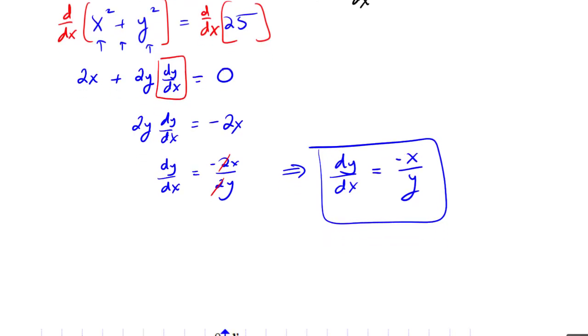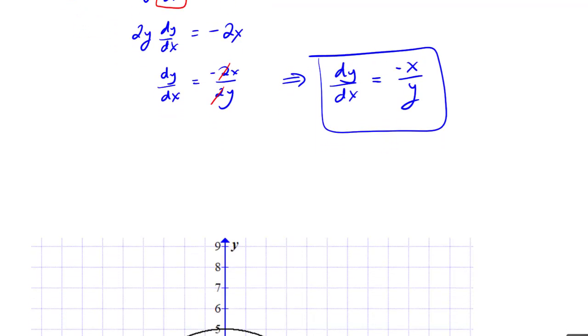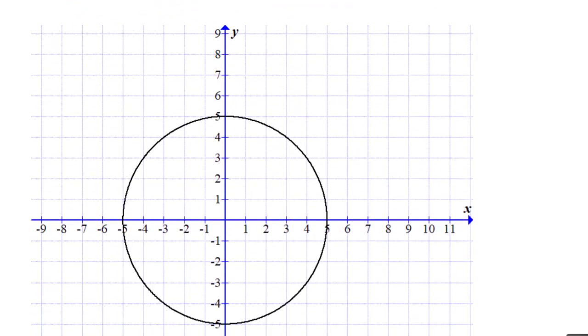I want to show you that this is really working out the same way as earlier. When we were talking about what the derivative is, the derivative is still the slope of the tangent line.